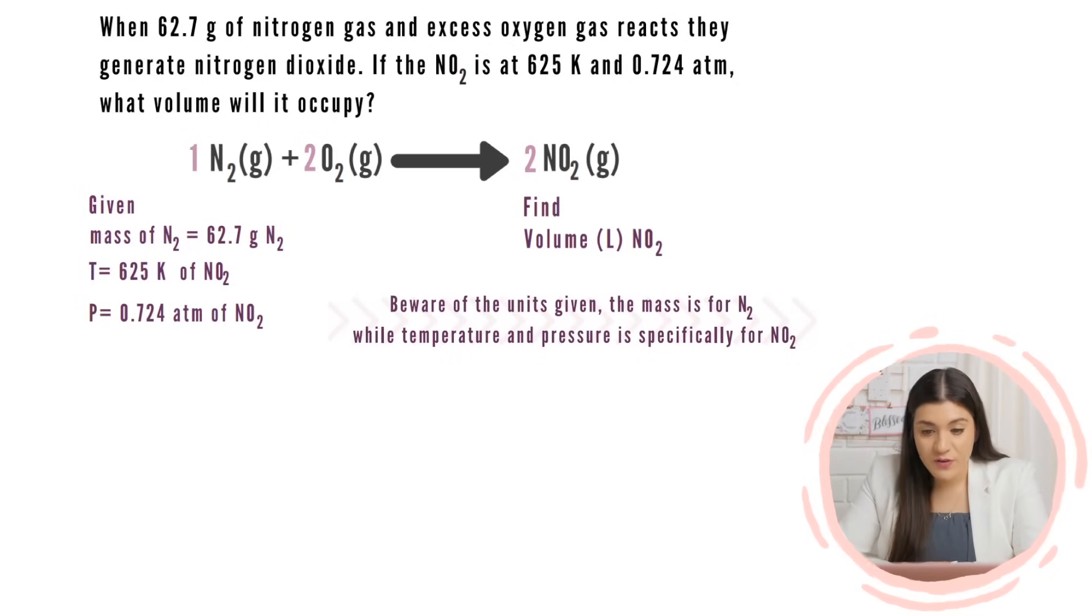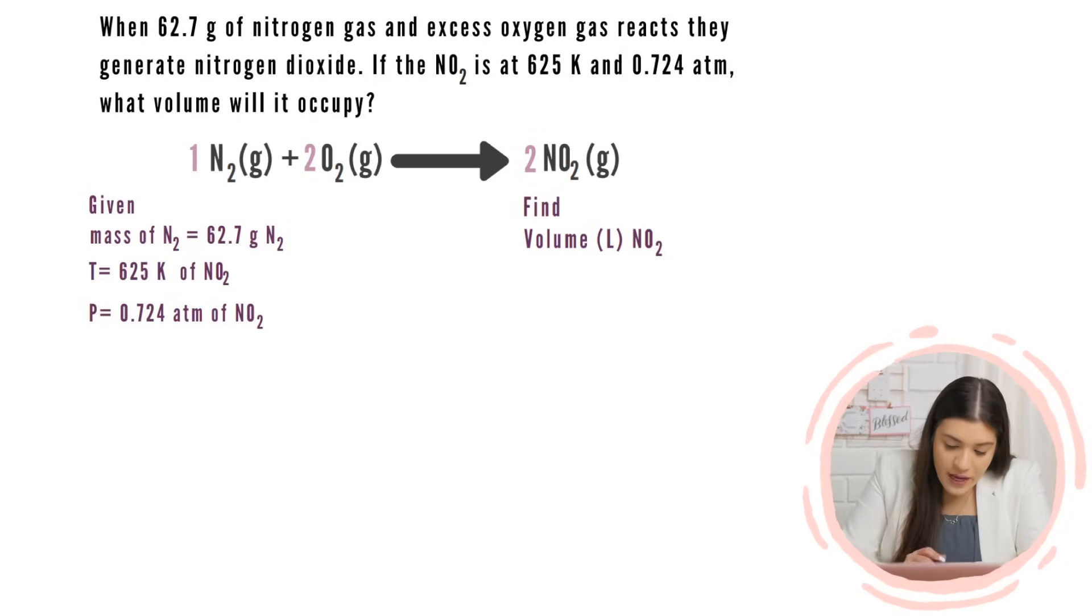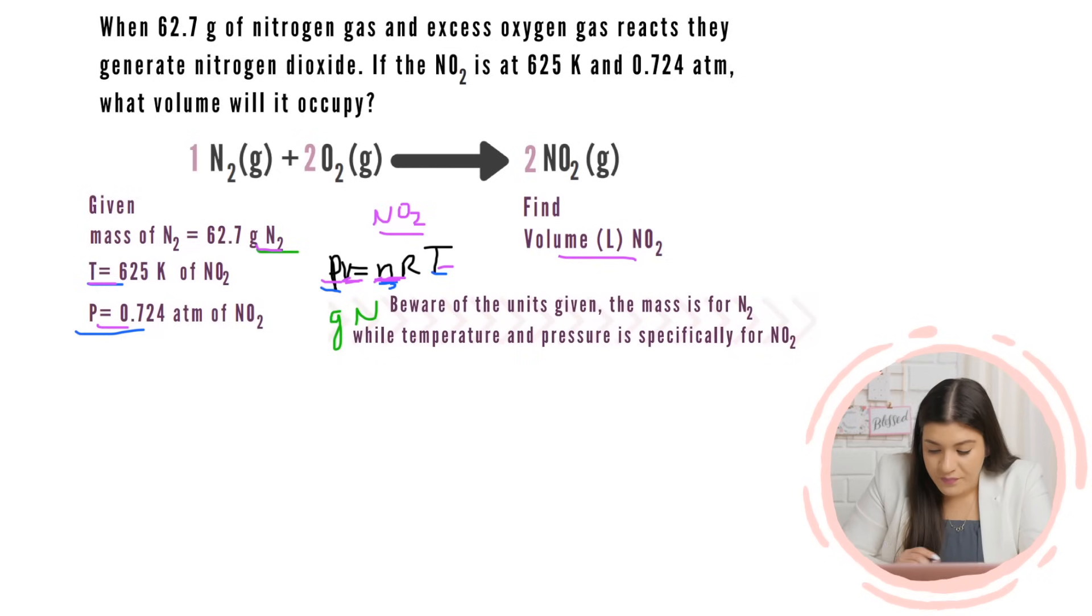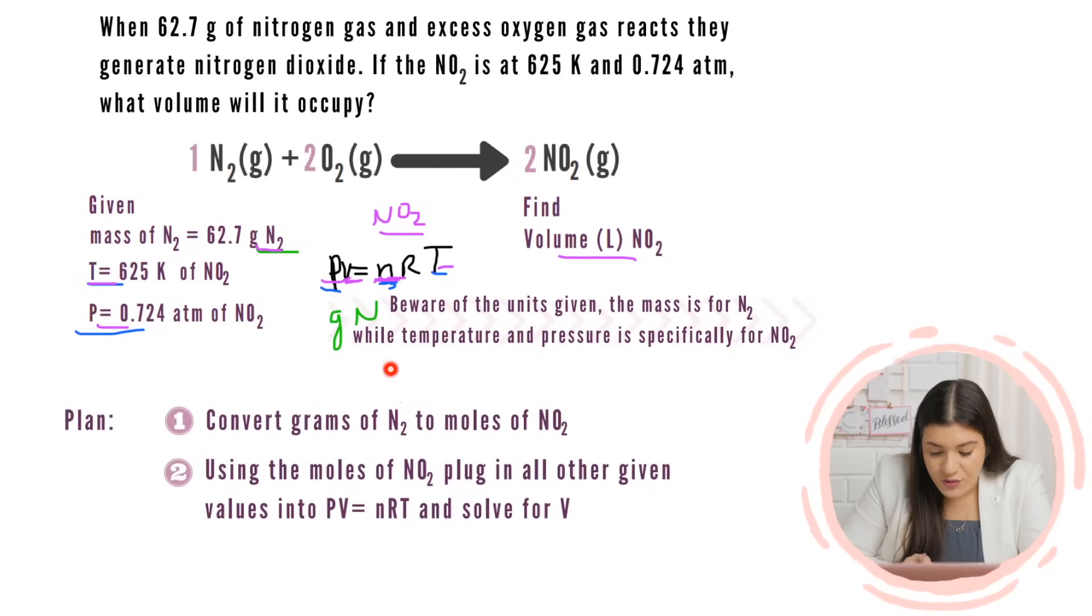That's why I wanted to just double check. Combined gas law is the super large one, the P1 V1 over T2. So cool. The ideal gas law, that's correct. So we'll use the ideal gas law. And then I just mentioned here, just be aware of the units that the mass is for N2, and then the temperature and pressure is NO2. So yeah, we are going to use PV equals NRT. And then we're initially given our pressure and our temperature, but we don't have enough information. We're looking for the volume of NO2.